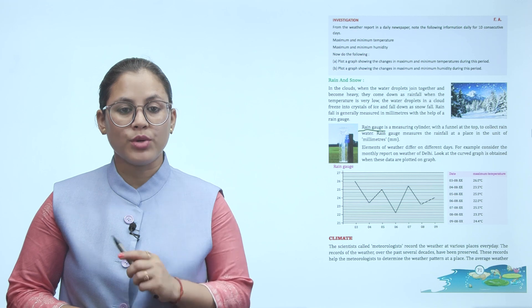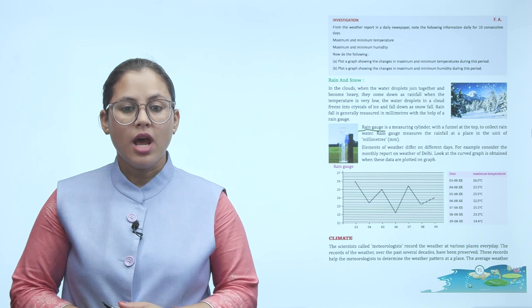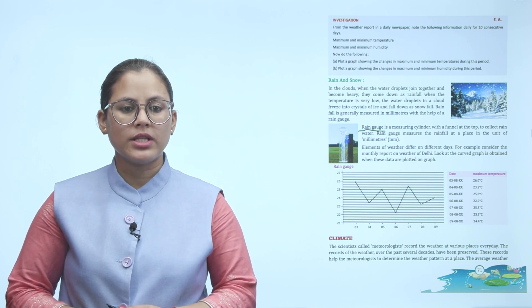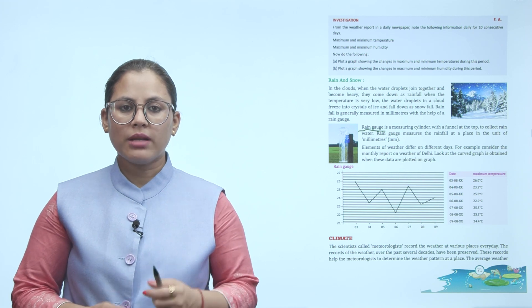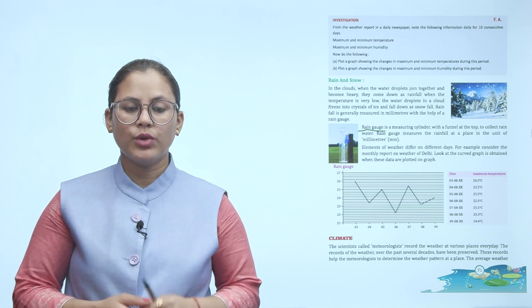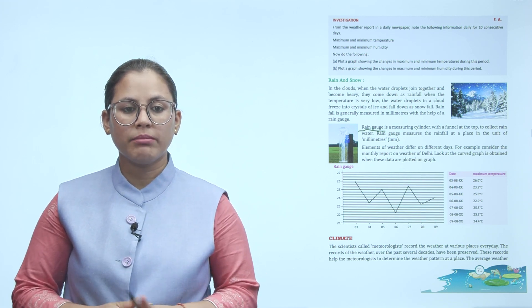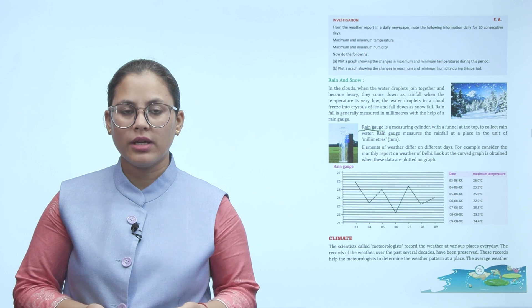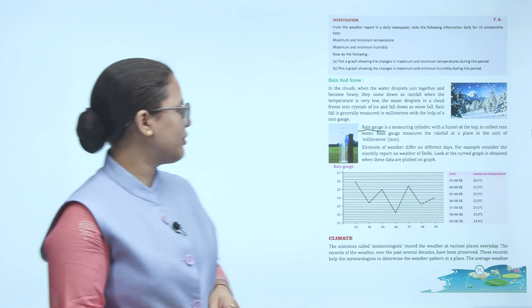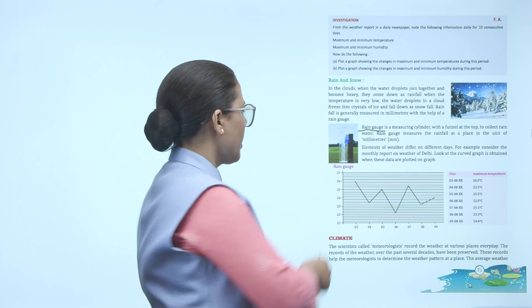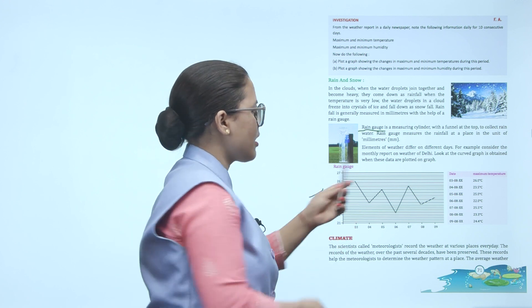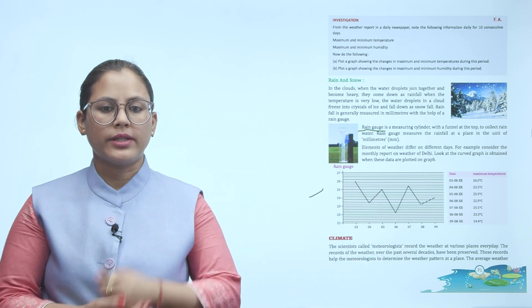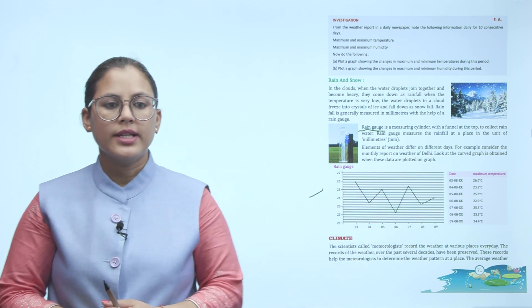Consider the monthly report on weather of Delhi. Look at the curved graph obtained when this data is plotted. The elements are different on different days. When you collect all the data and plot it, you get a graph showing how weather elements vary over the month.